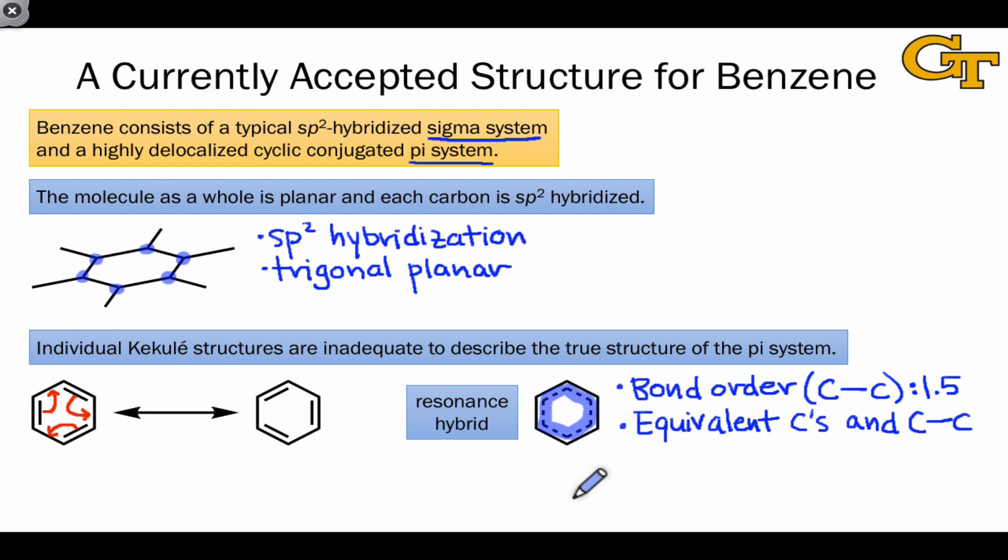That delocalization gives the electrons greater stability and makes them resistant to, for example, electrophilic addition reactions. Such addition reactions would destroy some of the conjugated cyclic pi system within benzene.